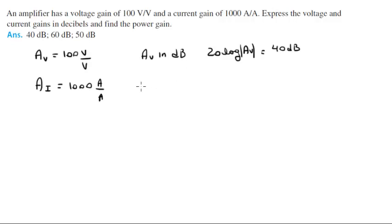Now the current gain Ai in dB is also given by 20 log of the absolute value of Ai, which comes out to be 60 dB. So you can see it's 40 and 60.